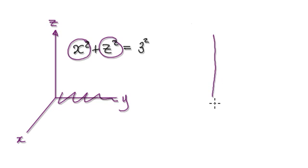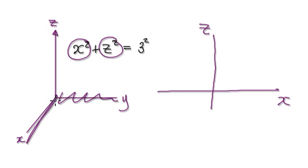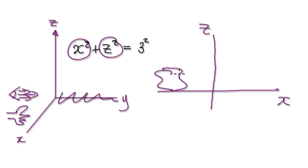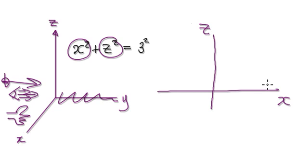Imagine Z is here and X is here. Imagine your eyes are here, looking in this direction. Your right hand is in the positive X direction, and your left hand is in the negative X direction. Y will be up here, your right hand will be here, and your left hand will be here.